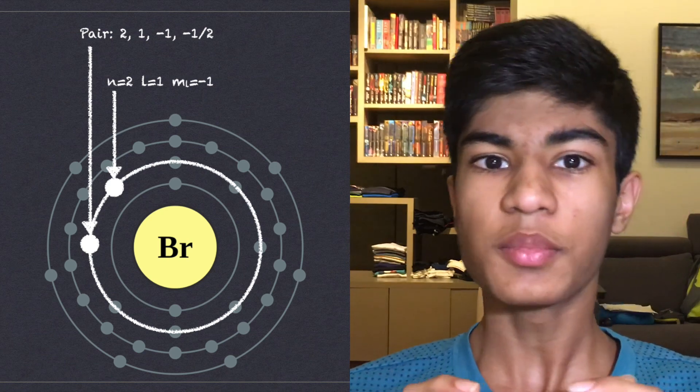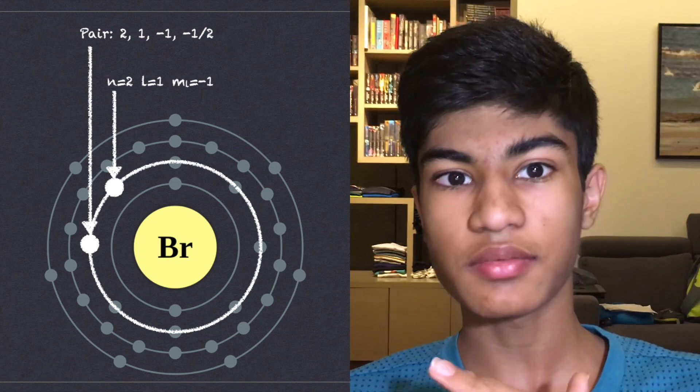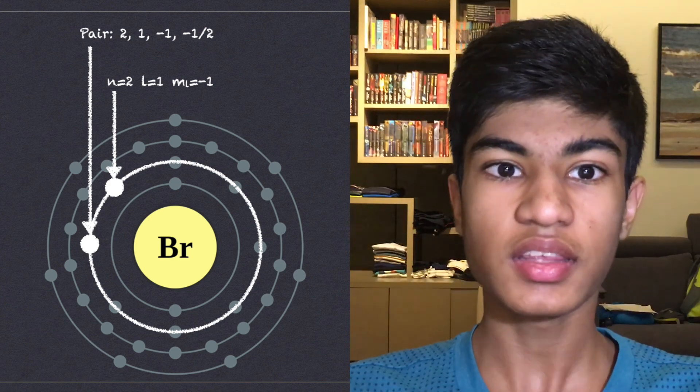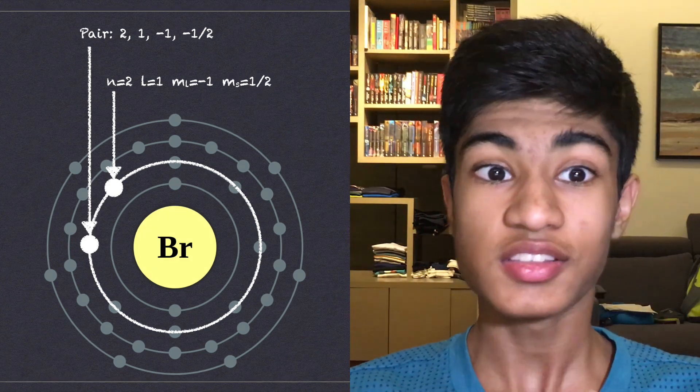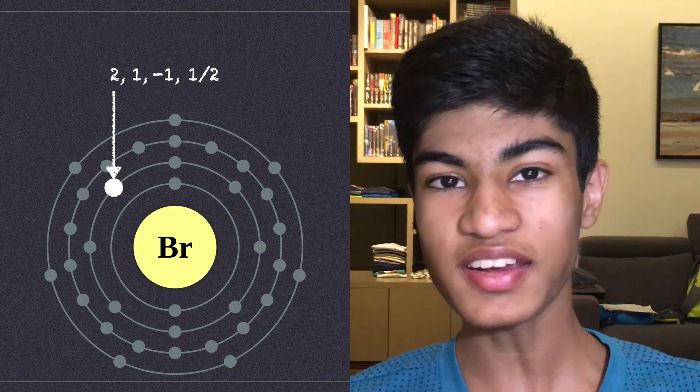And finally, the spin. Because each electron has to have a completely unique ID, this cannot be the same for the pair and our electron, giving our electron a value of half. So there we have it. Our electron is 2, 1, minus 1, half.